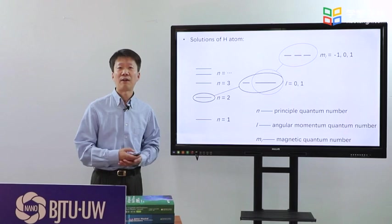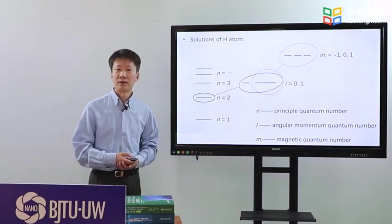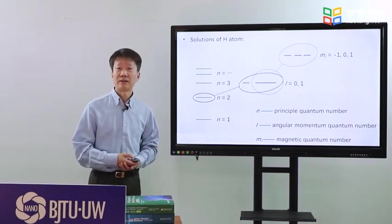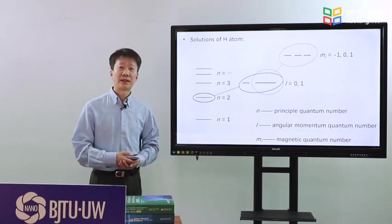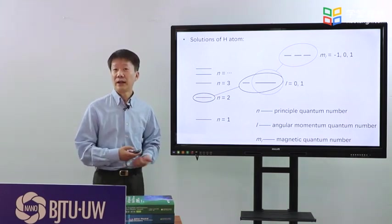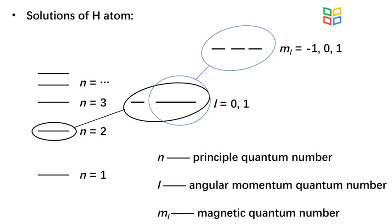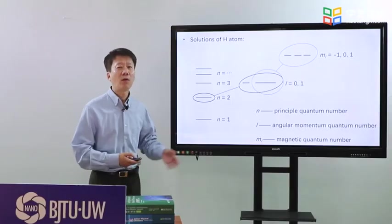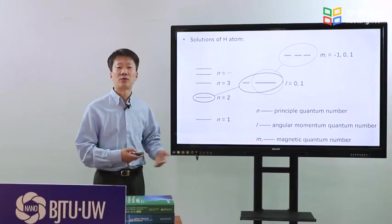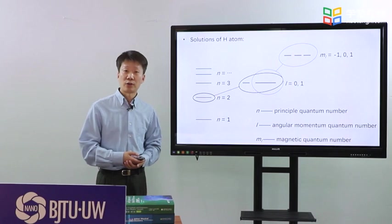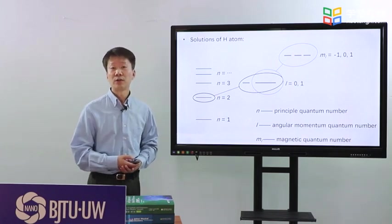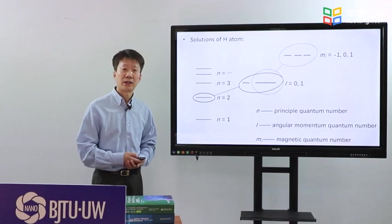We will also have L as a subsolution of M and ML as a subsolution to L. M is called a principal quantum number, L, angular momentum quantum number, and ML, magnetic quantum number. So, all these three quantum numbers are the solutions to Schrodinger equation for electrons around the nucleus.